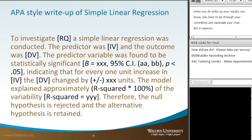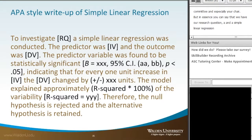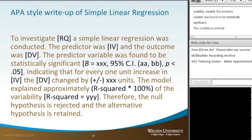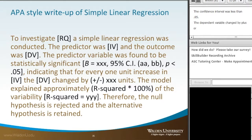a simple linear regression was conducted. The predictor was our independent variable and the outcome was the dependent variable. The predictor variable is found to be statistically significant, and here we'll give the unstandardized beta, the confidence interval, p less than 0.05, indicating that for every one unit increase in the independent variable, the dependent variable changed by either plus or minus so many units, which is the same units for the unstandardized coefficient.